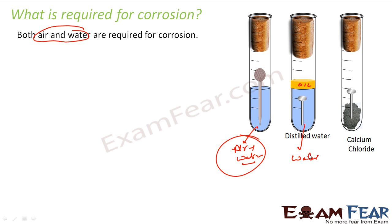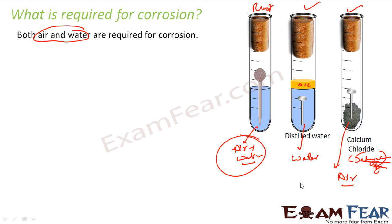So the second test tube has water but no air. In the third test tube we have put calcium chloride, a dehydrating agent, which will remove and absorb all the moisture. So here we have air but no water, because all the moisture in the air is absorbed by the dehydrating agent. After two or three days, the first nail got rusted, the second got no rust, and the third also got no rust. Thus we conclude that both air and water are required for corrosion.